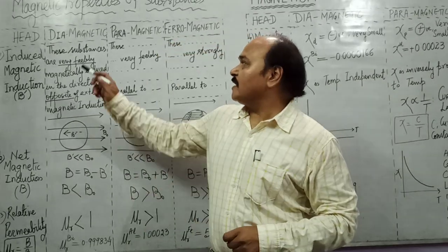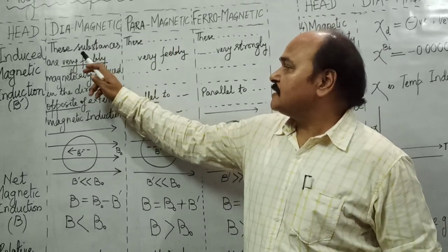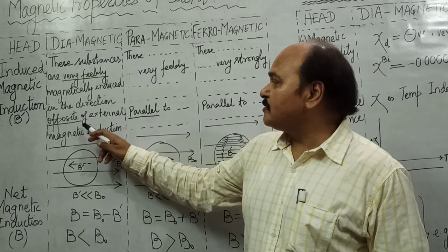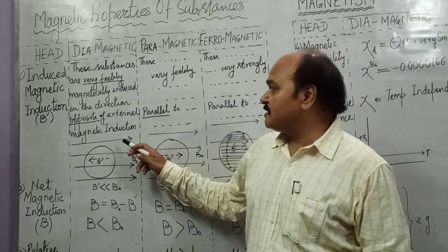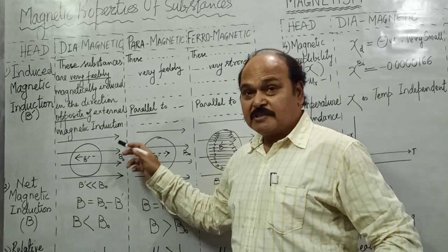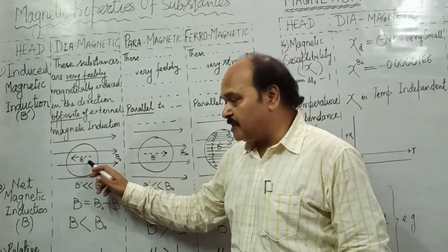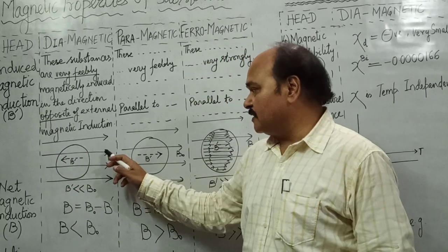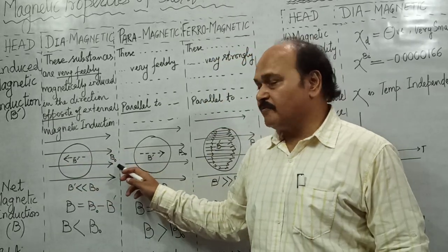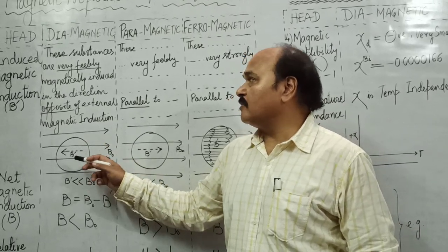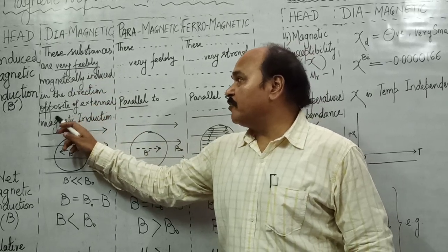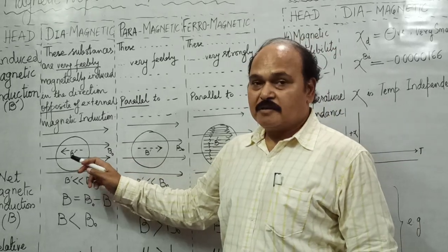Diamagnetic substances are very feebly magnetically induced in the direction opposite to the external magnetic field. When you place these substances in an external magnetic field, the induced magnetic field is very very weak and it is in the direction opposite to the external field. The substances are very feebly magnetically induced in the opposite direction — this is the natural behavior of a substance.